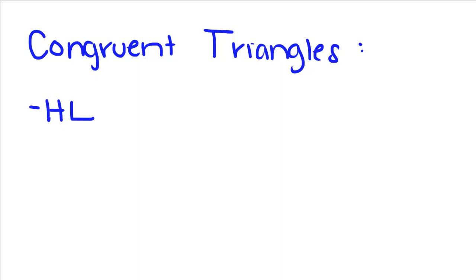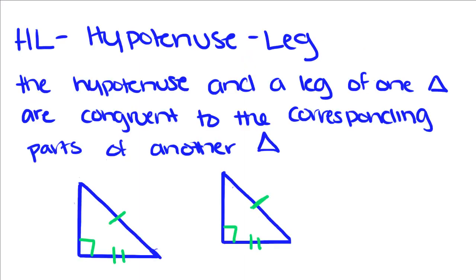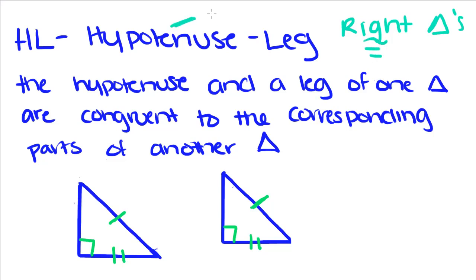Now we're going to talk about the last way to prove that you have congruent triangles. It's called HL, or hypotenuse-leg. HL is a way to prove that right triangles are congruent, because only right triangles have a hypotenuse.